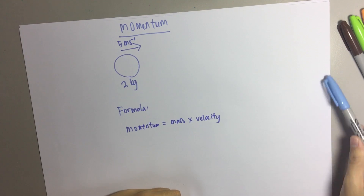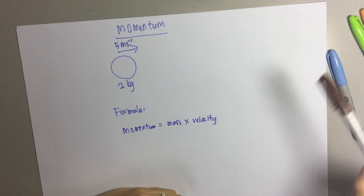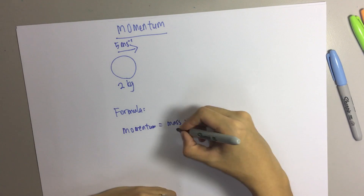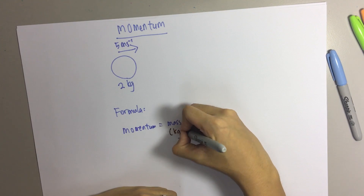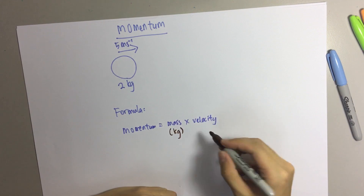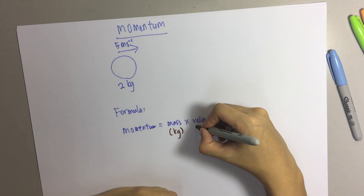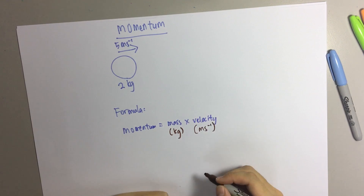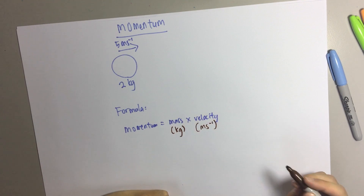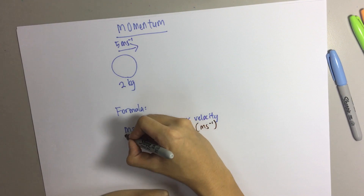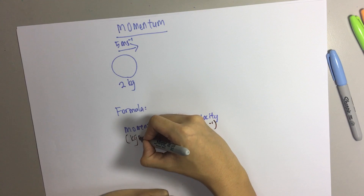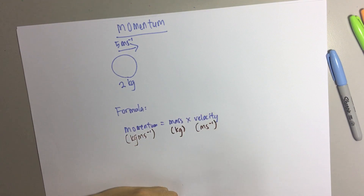It's very important for your physics that you need to memorize the units that you're using. For mass, it has to be kg. For velocity, it has to be m per second. And then for the unit of momentum, it will be kg meter per second.